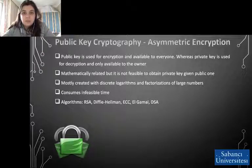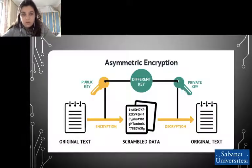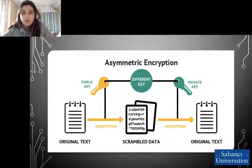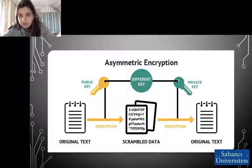Some asymmetric encryption algorithms include, but are not limited to: RSA, Diffie-Hellman, ECC, ElGamal, and DSA. Here is an example scenario where two different but related keys are used. The public key encrypts the plain text and is shared widely. The private key is not shared and is special to the owner — it decrypts the ciphertext and reveals the plain text.